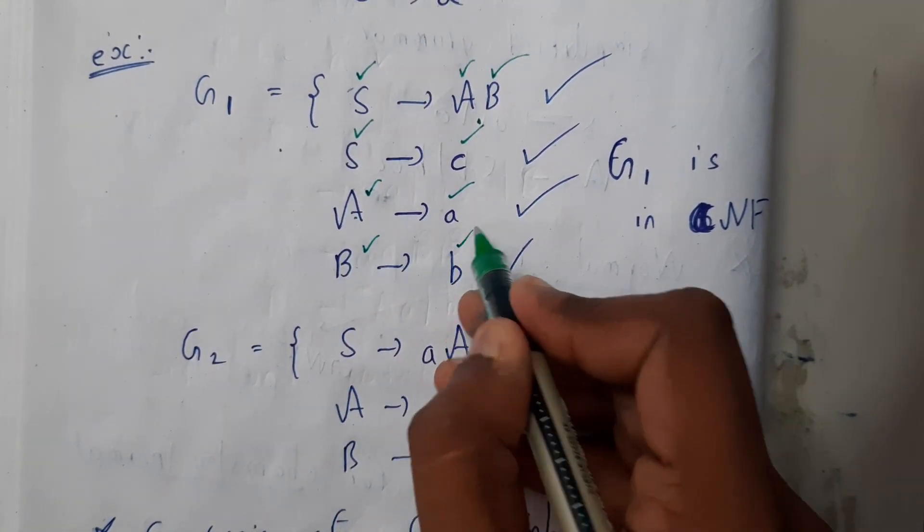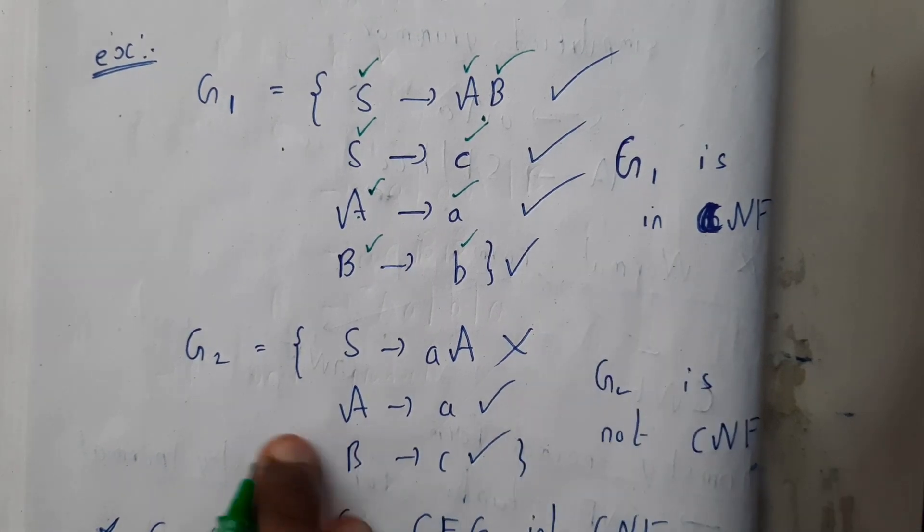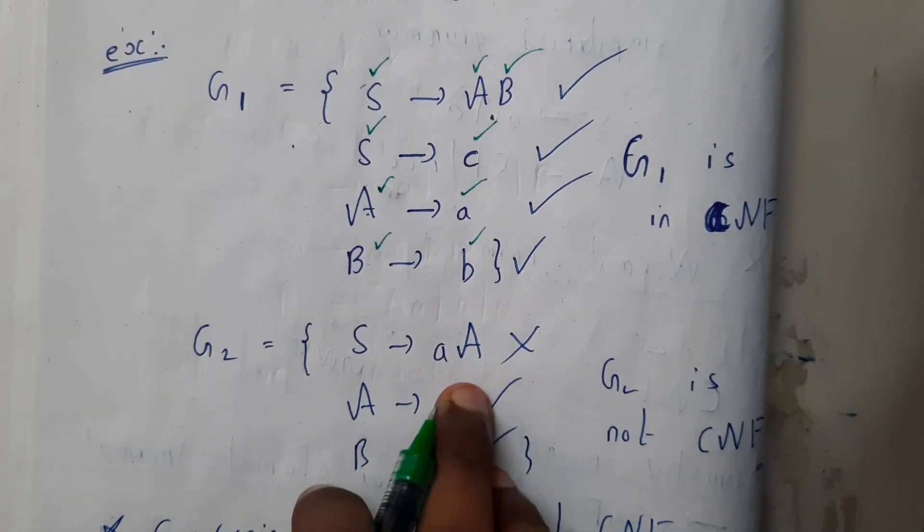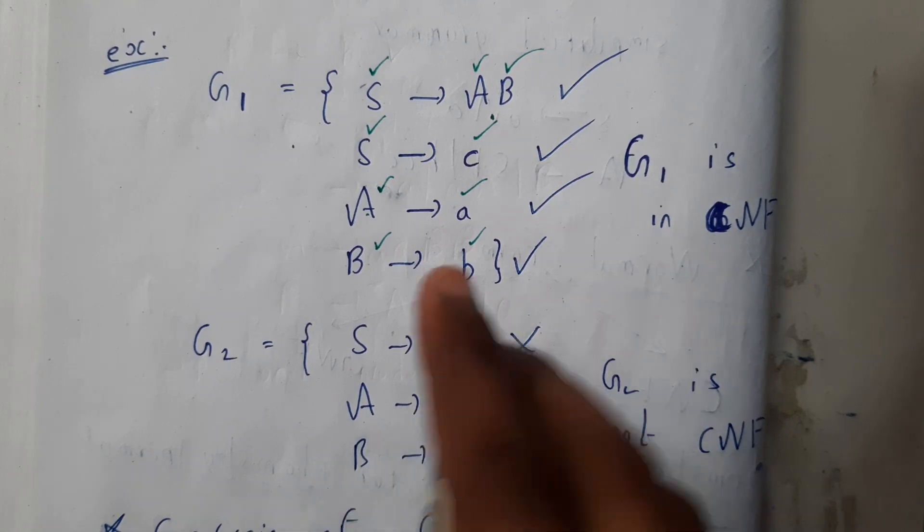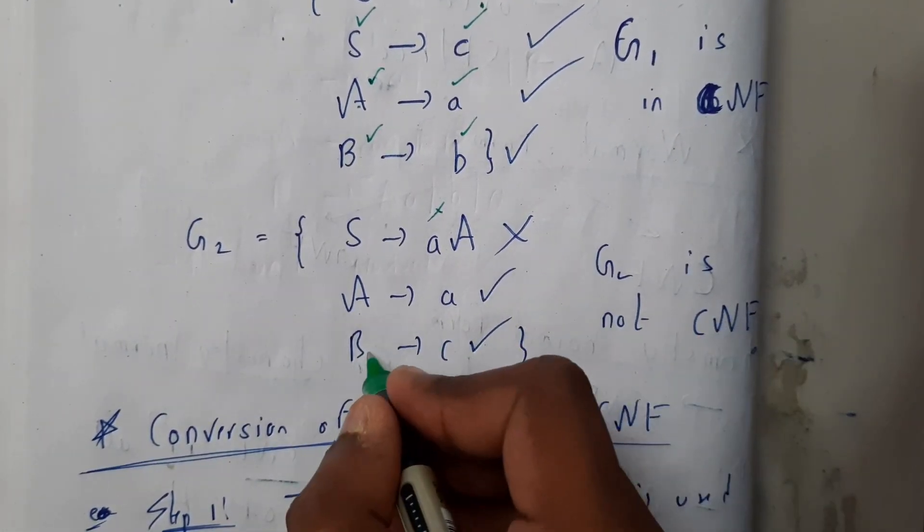So the first G1 is in CNF, whereas G2, S tends to small a capital A. Is this a proper way of CNF? No. A tends to small a SB, B tends to C. Yes, so G2 is not in CNF, Chomsky normal form.